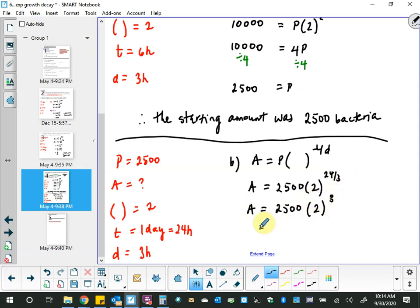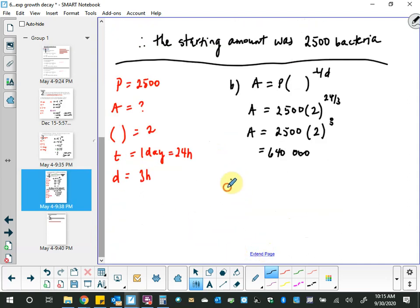So, A equals P bracket T over D. A is in question. Do you see that this is also not a logarithm question? Okay, I know that 2 to the 8 is fairly large. So, I'm just going to figure it out. So, 2 to the 8 is 256 times the 2,500 that was there at the beginning and I get 640,000 bacteria. That's estimated. So, these are predictors. There should be.